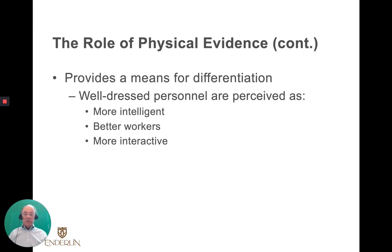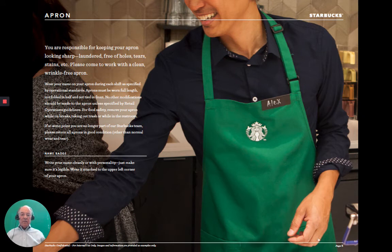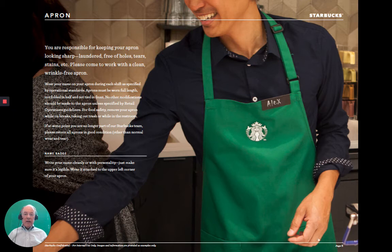The Starbucks dress code lookbook is something included in the ELMS that you can take a look at. But this gives you a brief look at the apron — it looks the same whether you're in the Philippines, the United States, or wherever. How the name is shown, those things are all part of what you expect of the Starbucks barista. They have a very distinct book about what you can do, what kind of hairstyle you can have — all part of the package of their image.